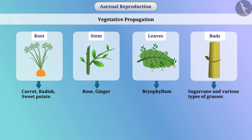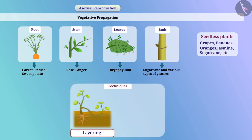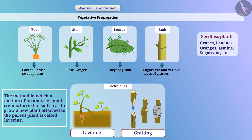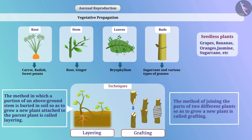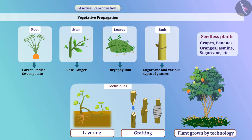Vegetative propagation can be used in agriculture for the production of grapes, bananas, oranges, jasmine, sugarcane, etc. Techniques like layering and grafting can be used. The method in which a portion of an above-ground stem is buried in the soil so as to grow a new plant attached to the parent plant is called layering. The method of joining the parts of two different plants to grow a new plant is called grafting. Flowers and fruits can be obtained in less time from plants grown by such techniques than from plants grown by seeds.